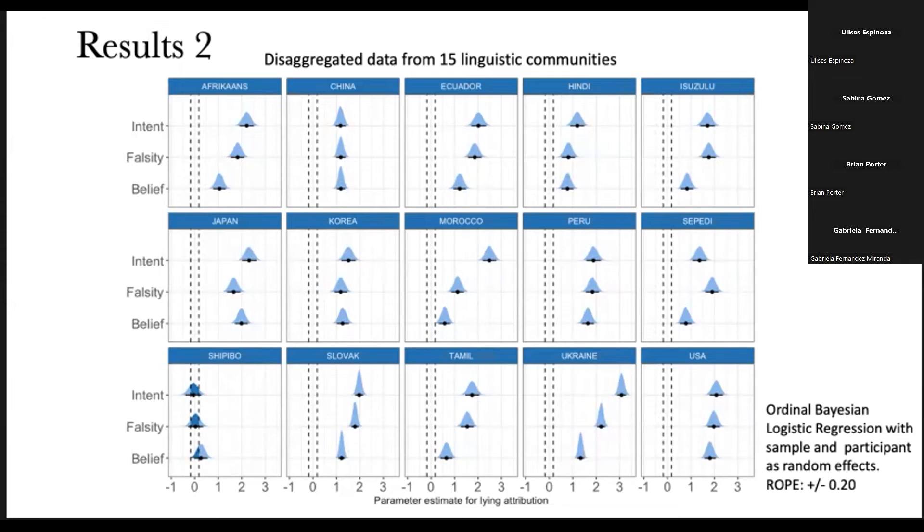So it seems that the prototype has some features that are to some degree universal. This universality is given here for the presence of these three variables. So our first hypothesis turns out to be right, apparently.